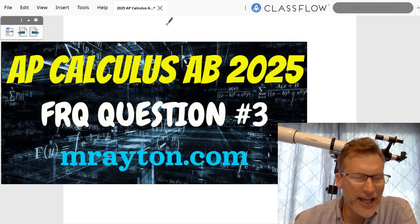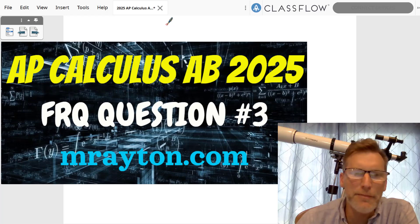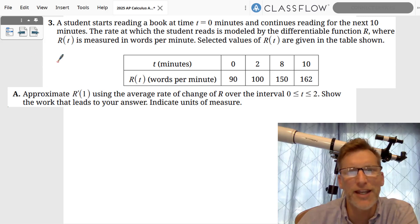Hey, this is Mr. [name], and this is the AP Calculus AB 2025 exam taken in May 2025. This is free response question number three, the first of the non-calculator free response questions. You can see it's all about students reading books. You can see r(t) is in words per minute, time is in minutes, and we want to approximate...